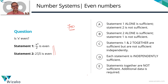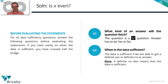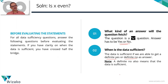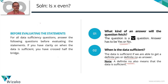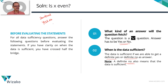Before venturing into the statements, let's get clarity on what kind of question this is and when the data is sufficient. For any 'be verb' question, the answer is a yes or a no. The data is sufficient if you get a definite yes or a definite no. If the information tells you X is definitely even, the data is sufficient. Conversely, if the information tells you X can never be even, that's also sufficient — a definite no still means sufficient. When is it not sufficient? When you find one example where it's yes and another where it's no — sometimes yes, sometimes no means both possibilities exist, and we don't have a conclusive answer.